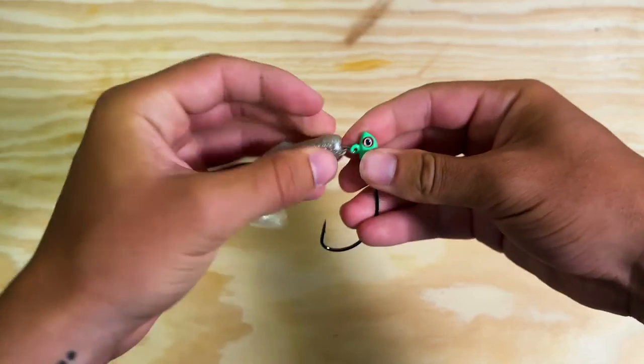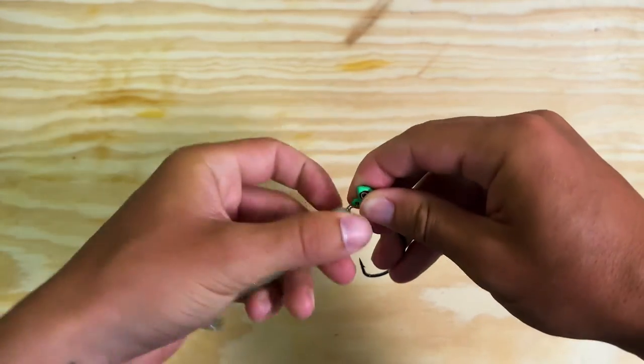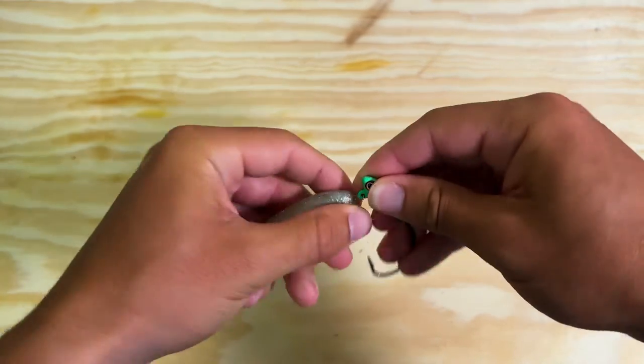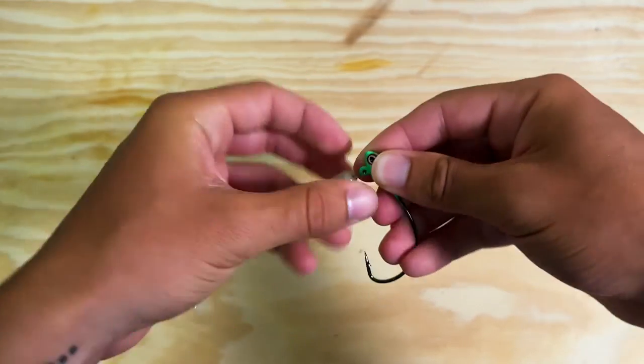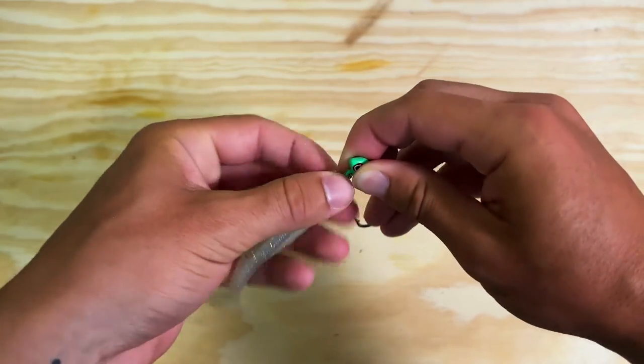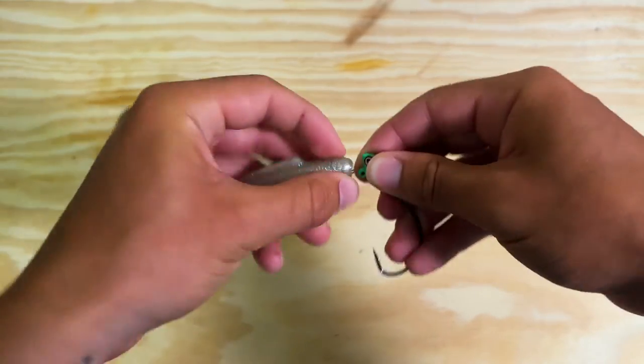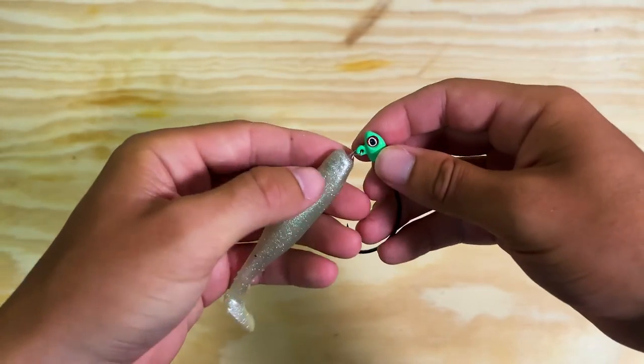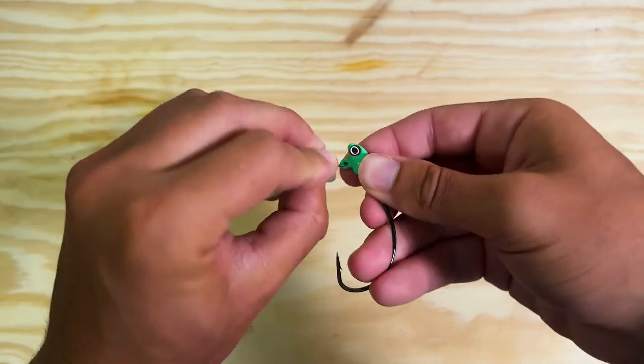If we didn't use that hook point to essentially create a channel there, the plastic wouldn't want to go on. But now that we created that channel, it's able to slip through. Still takes a decent amount of turns, especially to get it all the way up to the eyelet of the hook. But we're getting there. That's almost there.